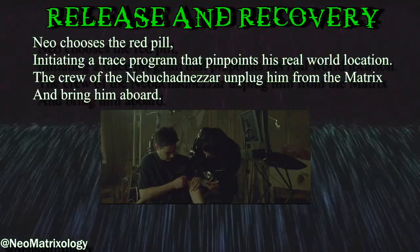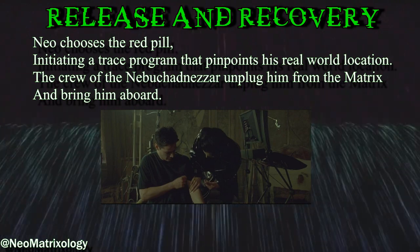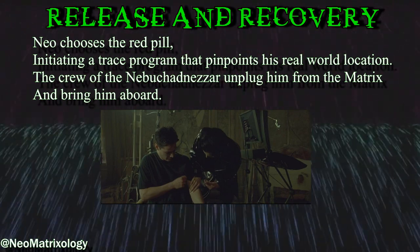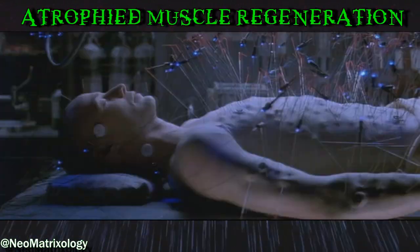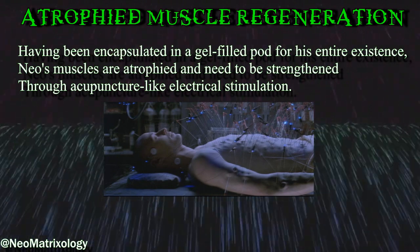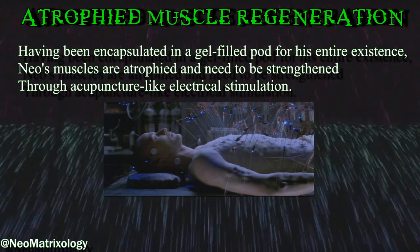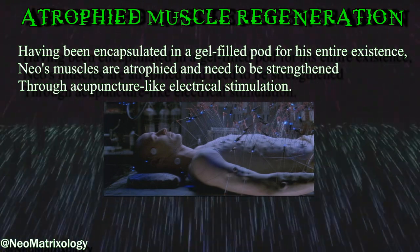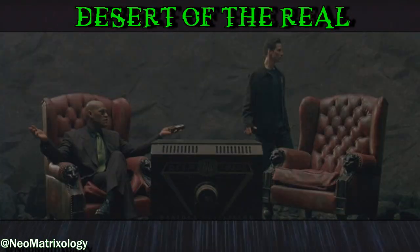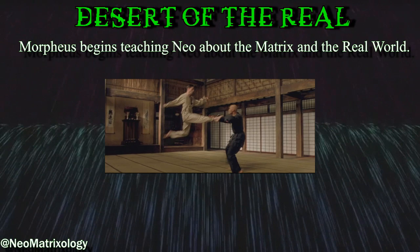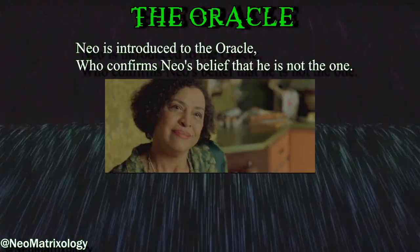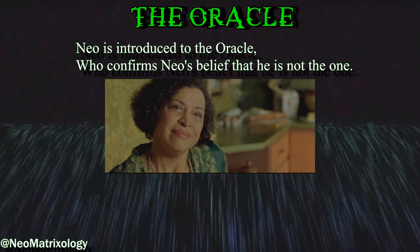Release and Recovery: Neo chooses the Red Pill, initiating a trace program that pinpoints his real-world location. The crew of the Nebuchadnezzar unplug him from the Matrix and bring him aboard. Atrophied Muscle Regeneration: having been encapsulated in a gel-filled pod for his entire existence, Neo's muscles are atrophied and need to be strengthened through acupuncture-like electrical stimulation. Desert of the Real: Morpheus begins teaching Neo about the Matrix and the real world. The Oracle: Neo is introduced to the Oracle who confirms Neo's belief that he is not the One.